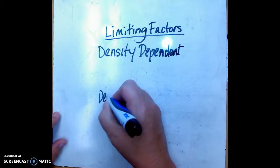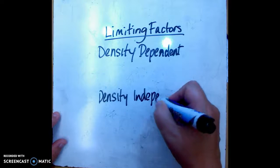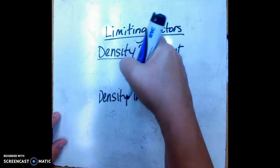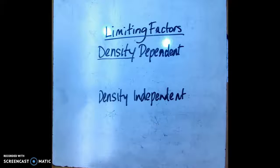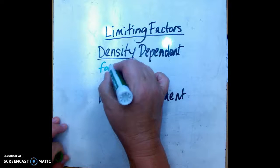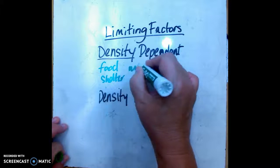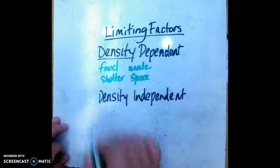The density dependent limiting factors are the things that limit the population because of the density of the population. So the more organisms there are in the population, the faster they're going to be limited. Those types of factors are things like food, shelter, finding a mate, space, water - all of those resources that organisms need to stay alive.